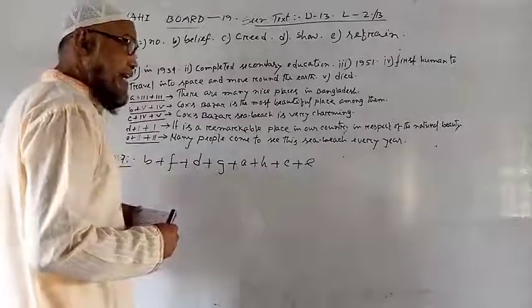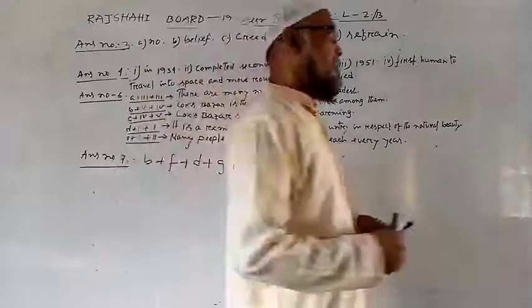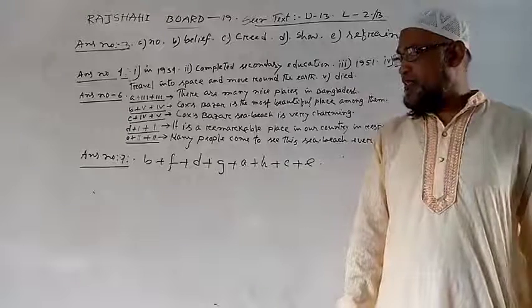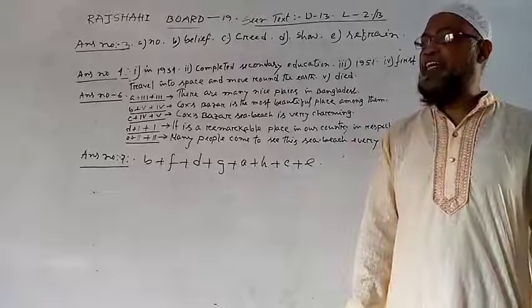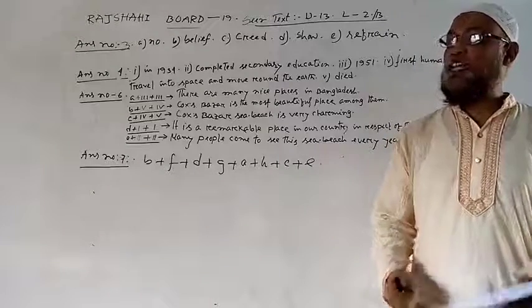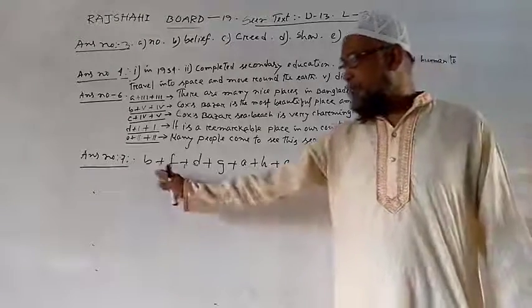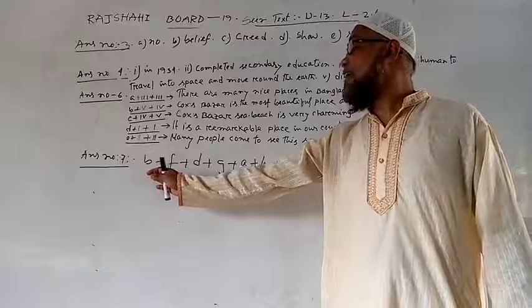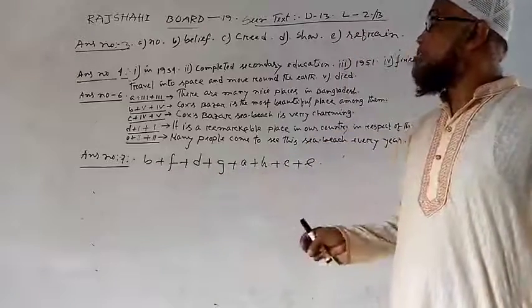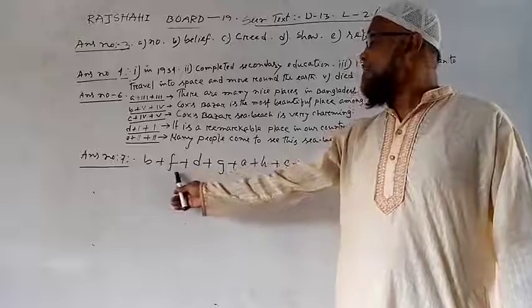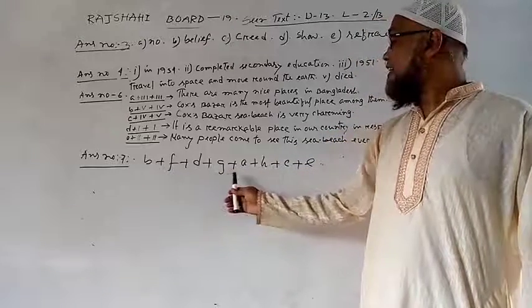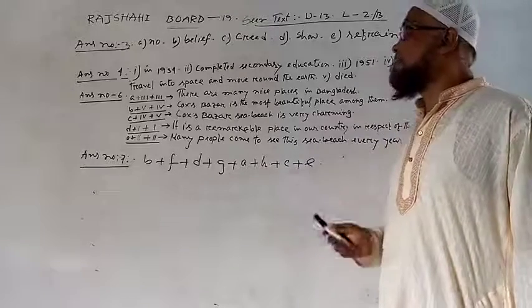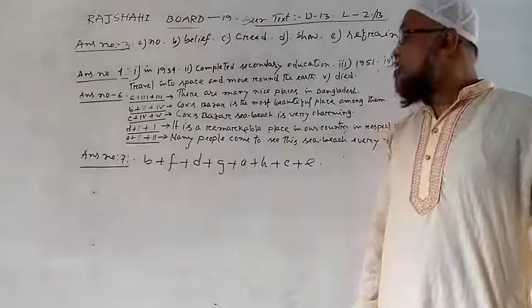And last one, item number 7, rearrangement. You know, there are some disordered sentences. And you must read these sentences at their rear ends. And you should write only the corresponding number. You will never put the questions. So for you, you should answer. First one B, then F, then D, then G, then A, then H, then C, and last E. This is the answer of your rearrangement.